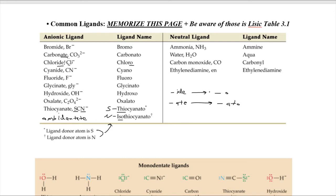A couple of special cases: ammonia just becomes amine with two m's — remember that to differentiate it from similar-sounding names. Water is called aqua. Carbon monoxide becomes carbonyl. Ethylenediamine is commonly abbreviated as 'en'. Glycinato uses the abbreviation GLY, and oxalato uses OX. These are the only ligand names you need to know for the exam. If you know the two IDE/ATE rules and these few special ones, you're really off to the races.